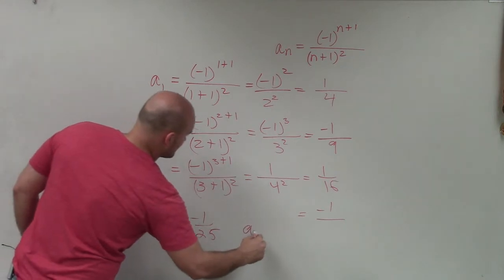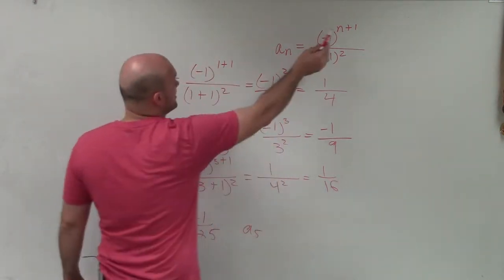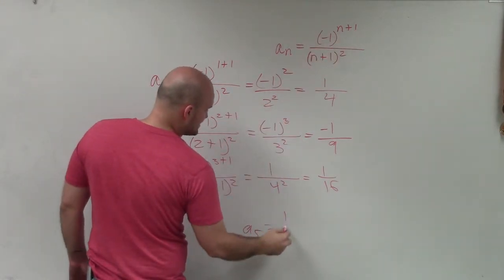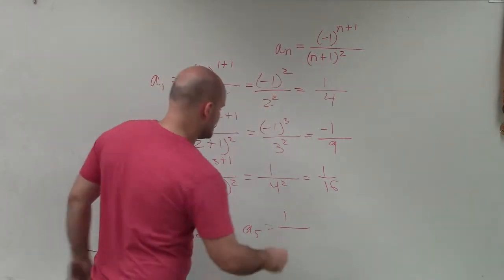And then let's figure out what a sub 5 would be. So a sub 5 is now I'm going to plug in an odd number, make that even. So that's going to be now equal to a positive 1 over 5 plus 1 is 6, 6 squared is 36.